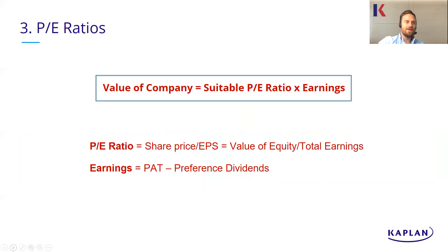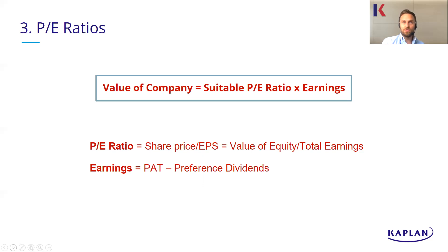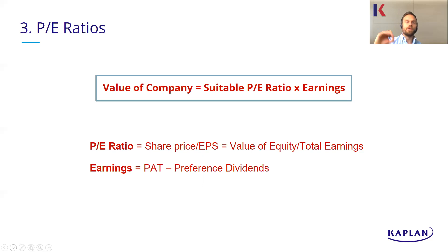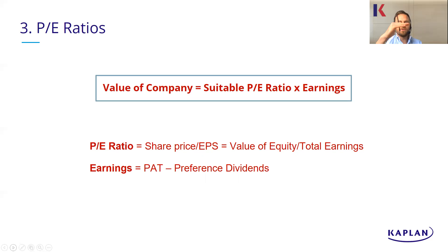The third method is using a PE ratio — the price-earnings ratio. To value your company, you take a suitable PE ratio and multiply it by your earnings. When I say a suitable PE ratio, what you're often going to have to do is borrow a PE ratio from a similar company — one in the same industry, or industry average figures. The PE ratio is the value of a company divided by its earnings. For example, if a company's PE ratio is 12, that's saying this company is worth 12 times more than its annual earnings. You can also do it on a single share basis — the share is worth 12 times more than its earnings per share.